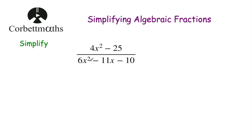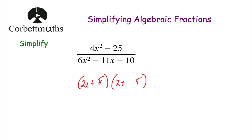Our next question asks us to simplify 4x squared minus 25, over 6x squared minus 11x minus 10. The numerator is a difference of two squares, so we square root each term: that gives 2x plus 5 and 2x minus 5. You can verify: 2x times 2x is 4x², the cross terms give minus 10x and plus 10x which cancel, and 5 times minus 5 is minus 25.